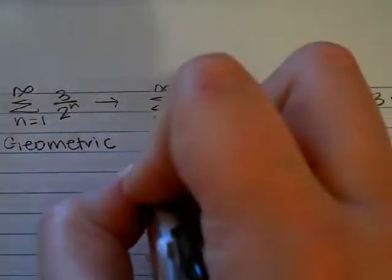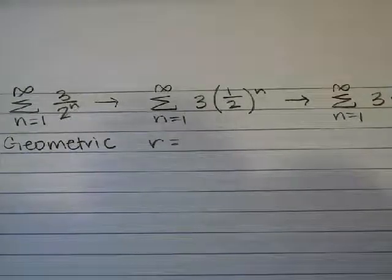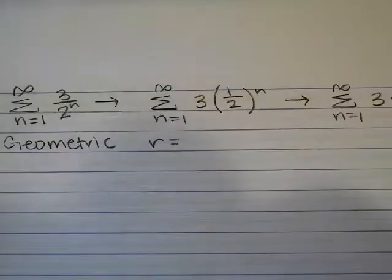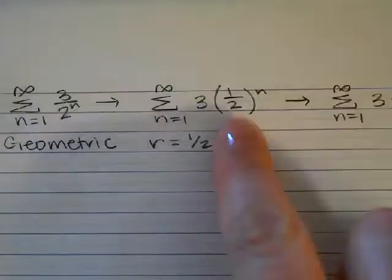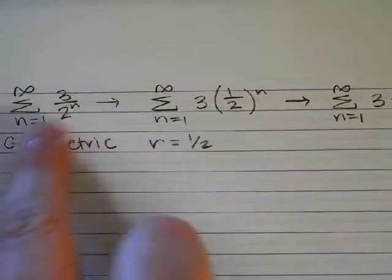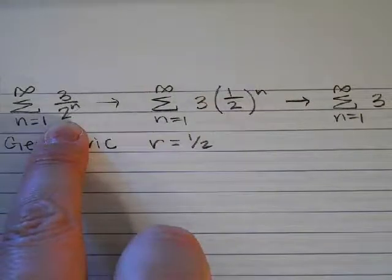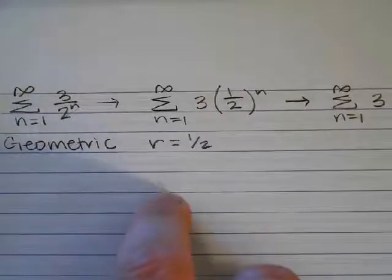If it's geometric, we want to know what the R value is — what does it multiply by repeatedly? It's going to multiply by one-half repeatedly; that's the number that gets the exponent. You can recognize that most easily in this form, or you can see it because it's dividing by two repeatedly, and dividing by two repeatedly is the same as multiplying by one-half. So the R value is one-half.